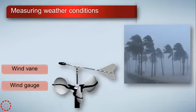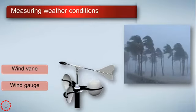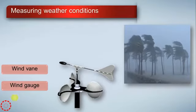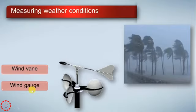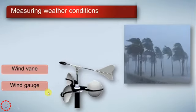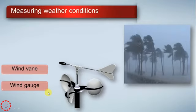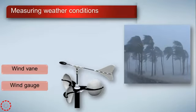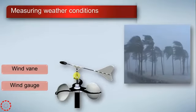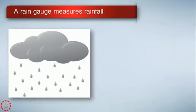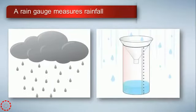For example, this wind is coming from the south and going to the north. We also have a wind gauge — the wind gauge tells us the intensity of the wind, whether the wind is strong or not.